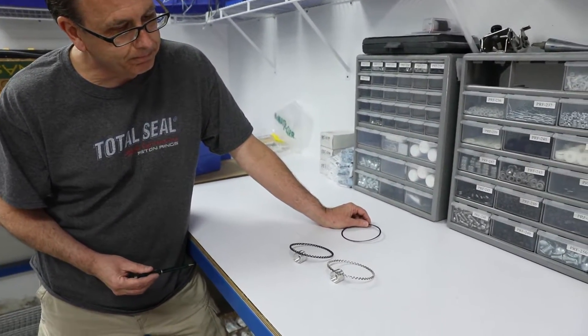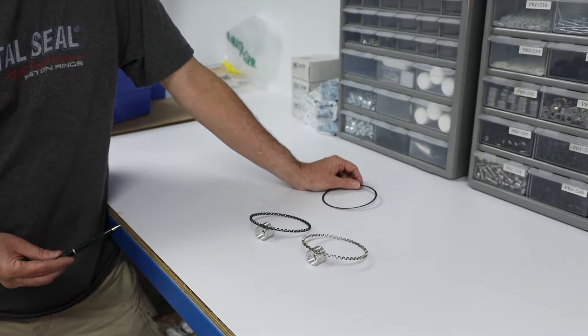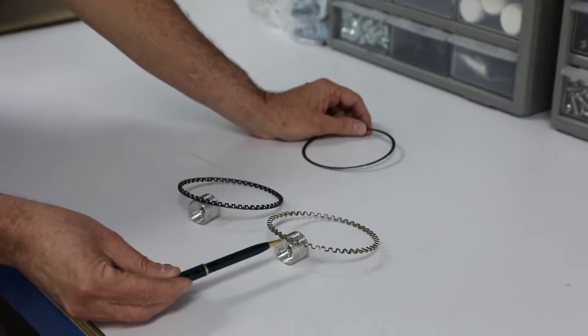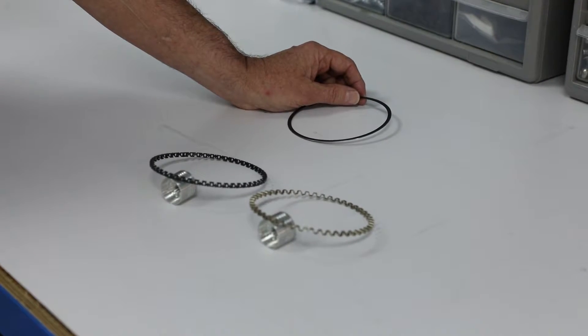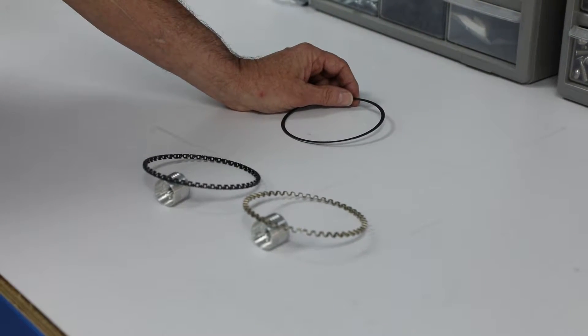What I've got down here are two different designs of oil ring. This is what's commonly referred to as a flex vent style oil ring. It's what you'll see in most applications today. We use them. It's an excellent oil ring.